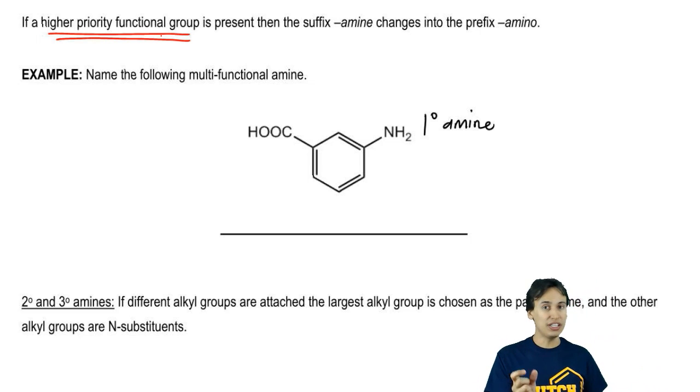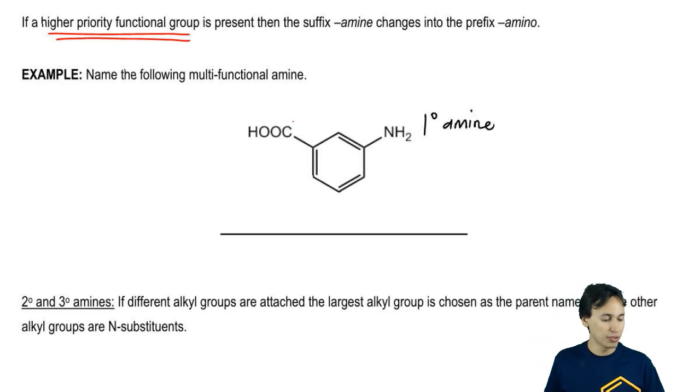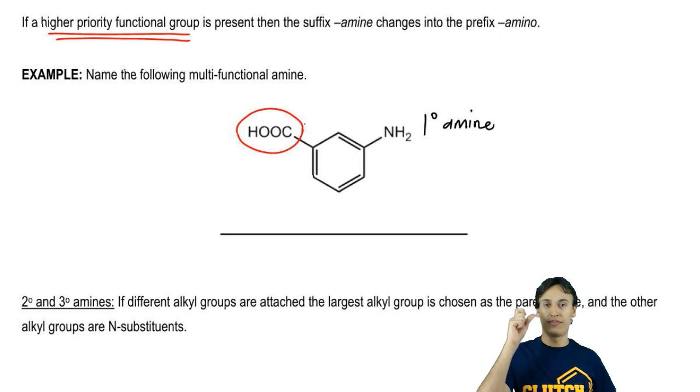You guys might recall that carbonyls are some of the highest priority groups in nomenclature. What happens if I have a primary amine but I have a carboxylic acid or some other kind of carbonyl, aldehyde, ketone, et cetera? Then how would we name this?